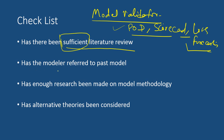The second checklist is whether the modeler has referred to the past model. Many times the modeler is building models for which the company already has models in production. The model is simply improving on or building something better than the existing model. As a model validator, one should ensure that the modeler has referred to past models in that subject and used the existing model as a benchmark.